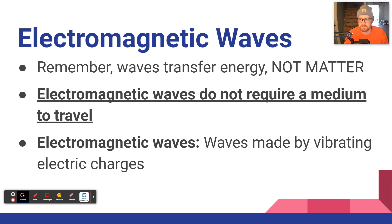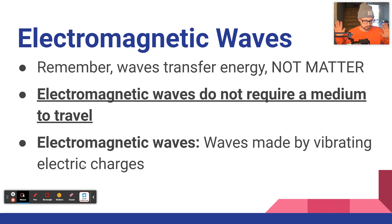Electromagnetic waves do not require a medium to travel. That's why we get heat from the sun, why you get sunburned when you go outside, and why one of the challenges of space travel is knowing how to deal with, contain, and mitigate gamma radiation that floats around in space — because it can go through most material.